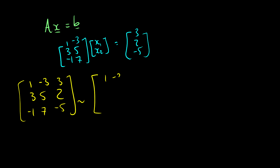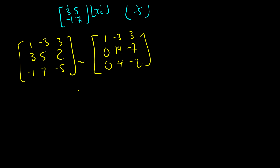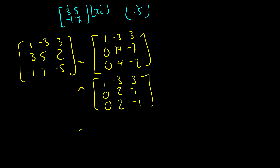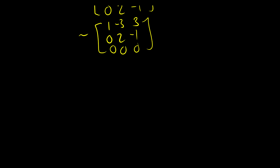Keeping the first row the same, we take the third row minus 3 times the first row to get [0, -2, -14 | -7]. Wait — adding the first row to the second gives [0, 4 | -2]. Dividing rows 2 and 3 to simplify: we get [0, 2 | -1] for both. The second and third rows are identical, so we have a free variable, and that row becomes [0, 0 | 0].